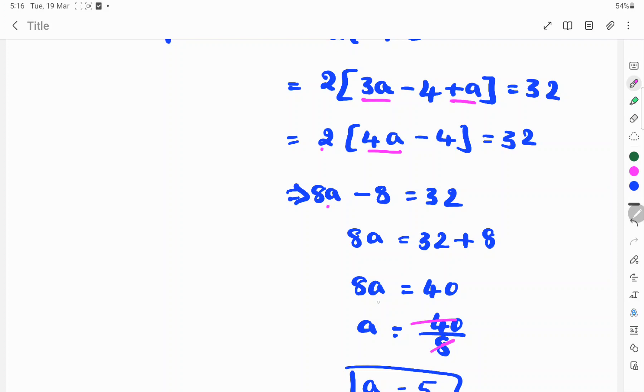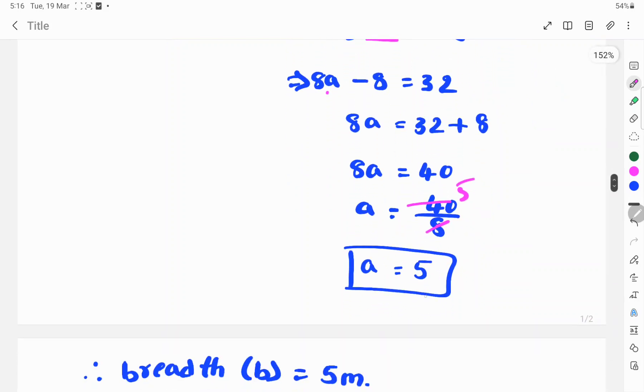Here, 8 is multiplied with A. When 8 changes to the left-hand side, it divides the number. So 40 by 8. 8 cancels with 40 five times. So A value is 5.